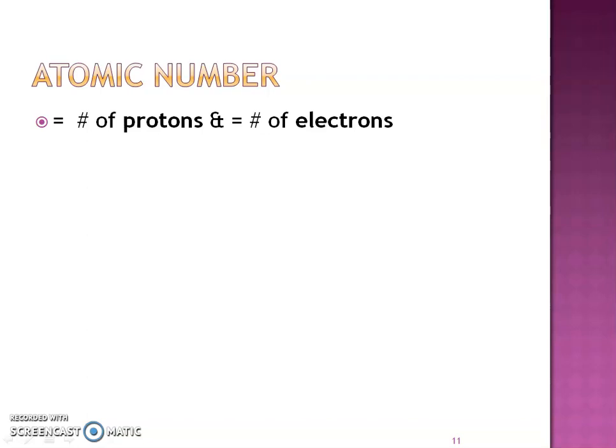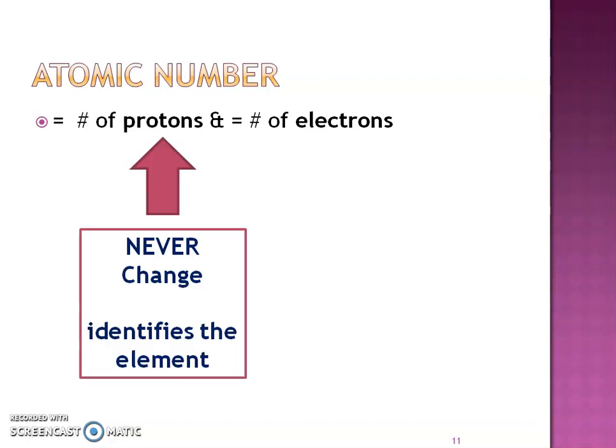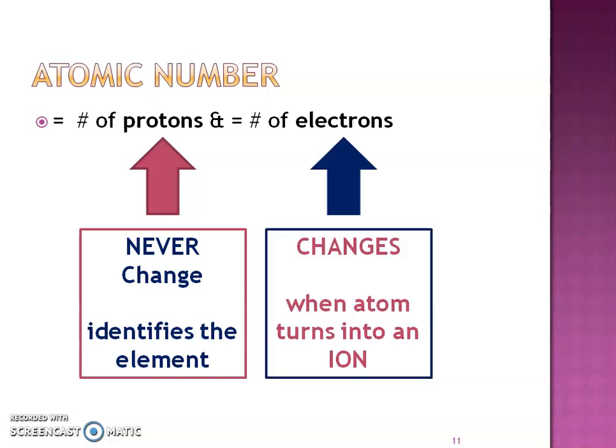The atomic number is the number of protons, and it also equals the number of electrons. So: atomic number equals protons equals electrons. Protons never change — that particular number, or the number of protons, will identify that element. The protons never, ever change. However, the number of electrons can vary. Some elements like to lose electrons, and some elements gain electrons when they're in the bonding process.